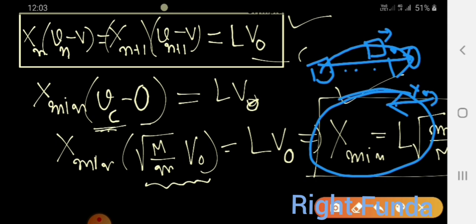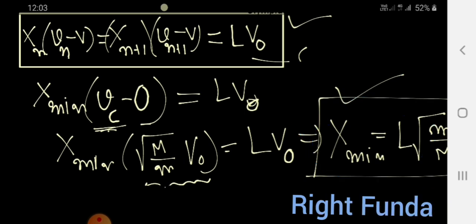This is a physics Olympiad preparation problem of the IAPT type, taken from Howard University's 2003 problems book assignment. If you like the solution, hit the like button, and subscribe to the channel for more problems and solutions.